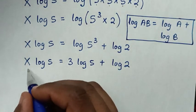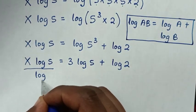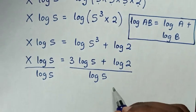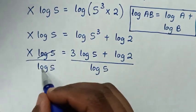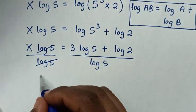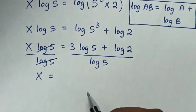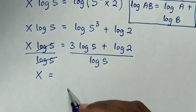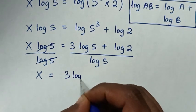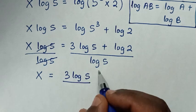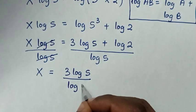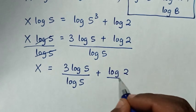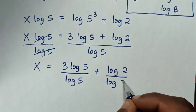Then we'll divide by log of 5 on both sides. So this and this will cancel, then it will be x is equal to — we'll divide log of 5 into each part — so it will be 3 log of 5 over log of 5, then plus log of 2 over log of 5.